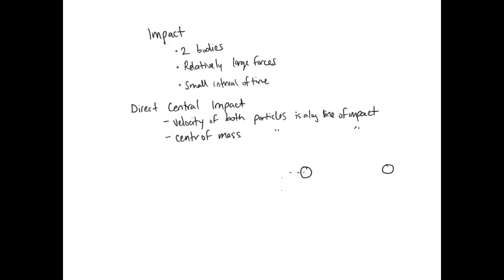So what does this mean? Let's say you have a particle here and a particle here. They're moving along one line and you have a plane of impact here. So these particles are going to move towards the plane of impact. M1 V1 is going this way, M2 V2 is going this way. Everything is perpendicular to the plane of impact, and everything is moving in the same direction.